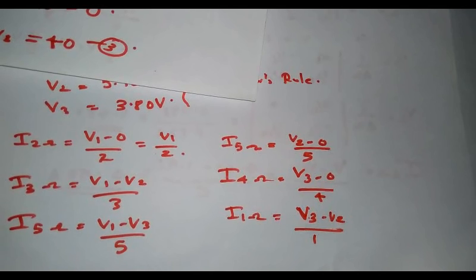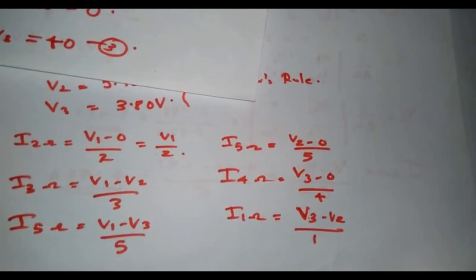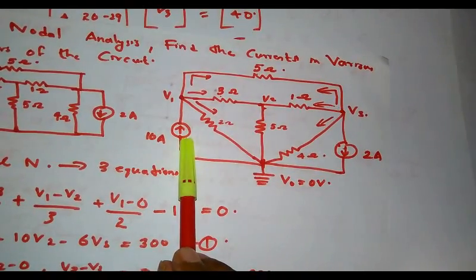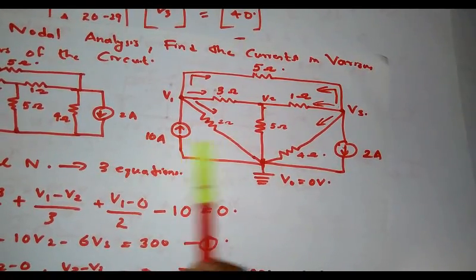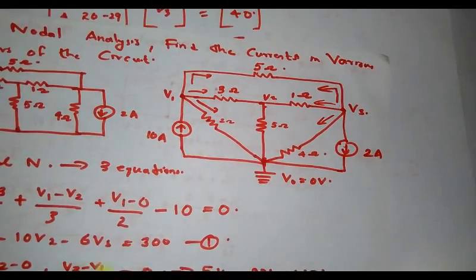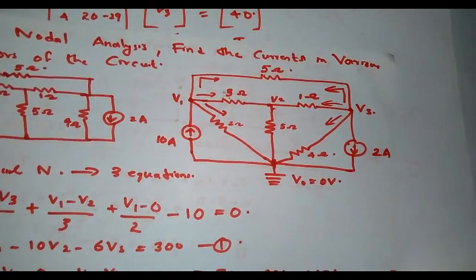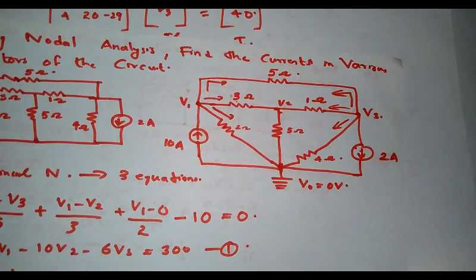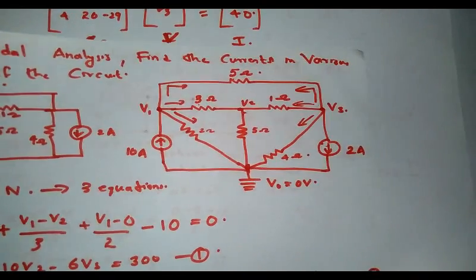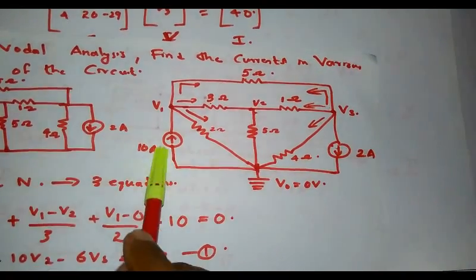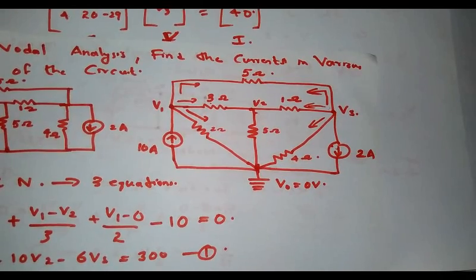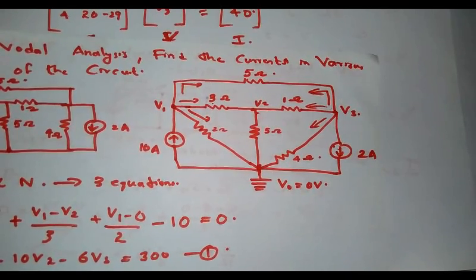This is the simplest way to solve using nodal analysis with Cramer's rule. The important point to remember is that if we see a current source in the given question, we should straightaway go for nodal analysis, even if it is not specified. The alternative method to solve the same current source circuit using mesh analysis would first require converting the current source into an equivalent voltage source using source transformation.